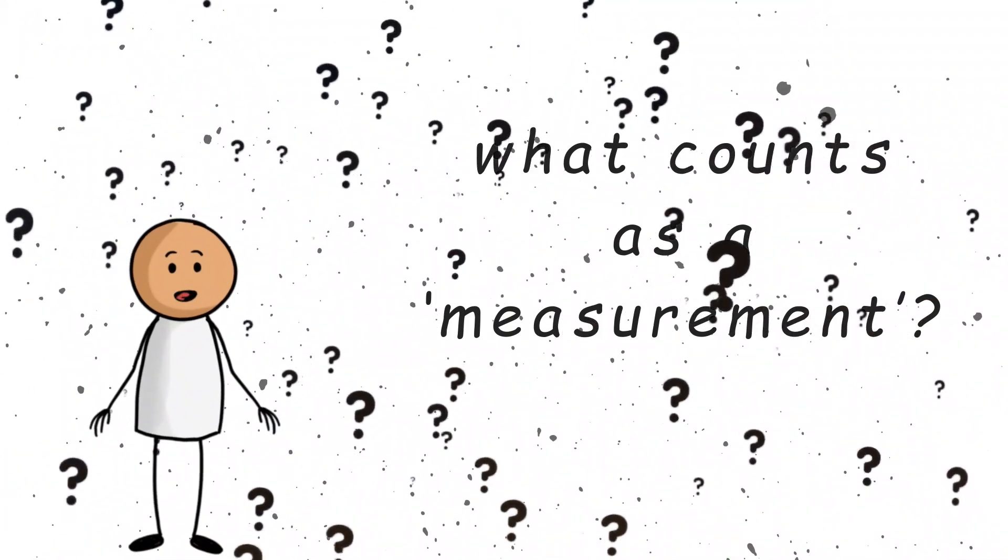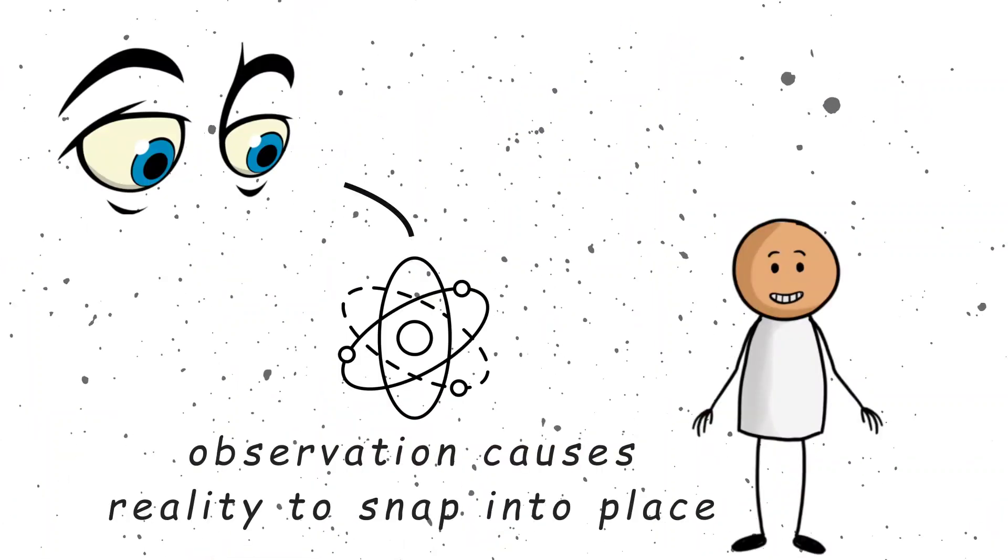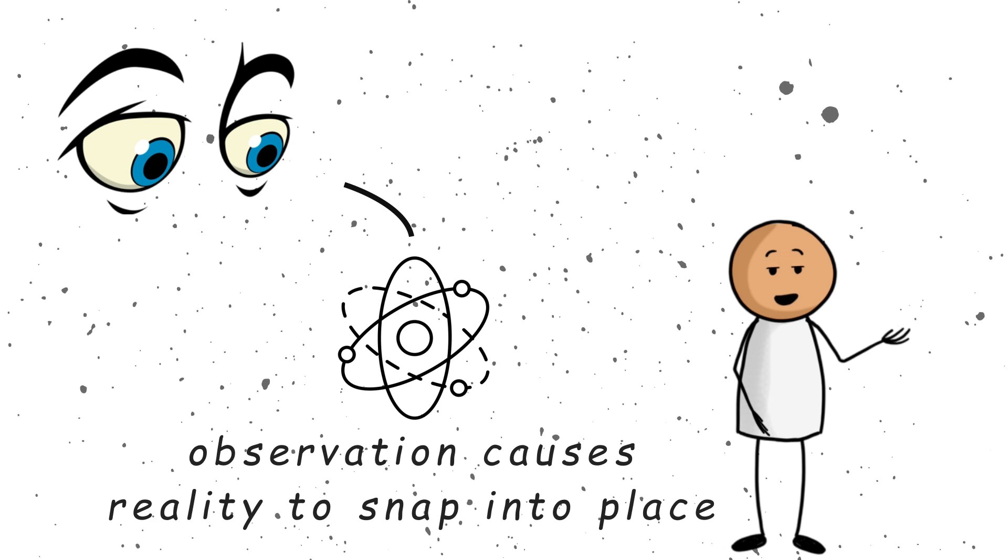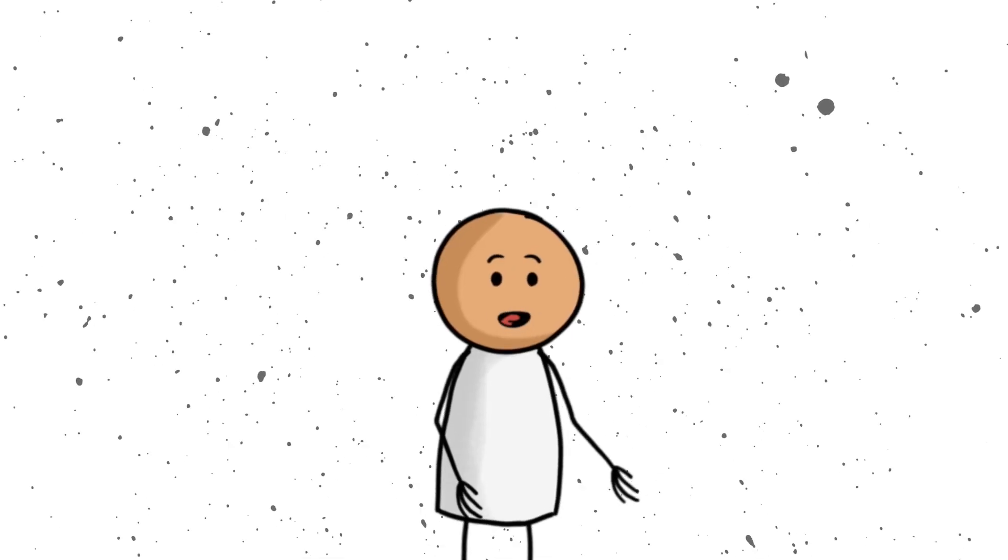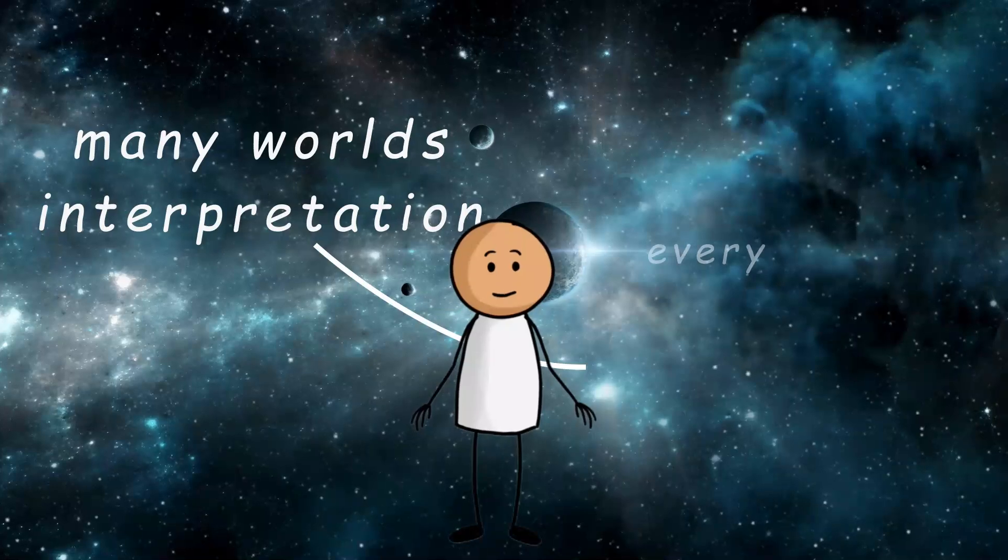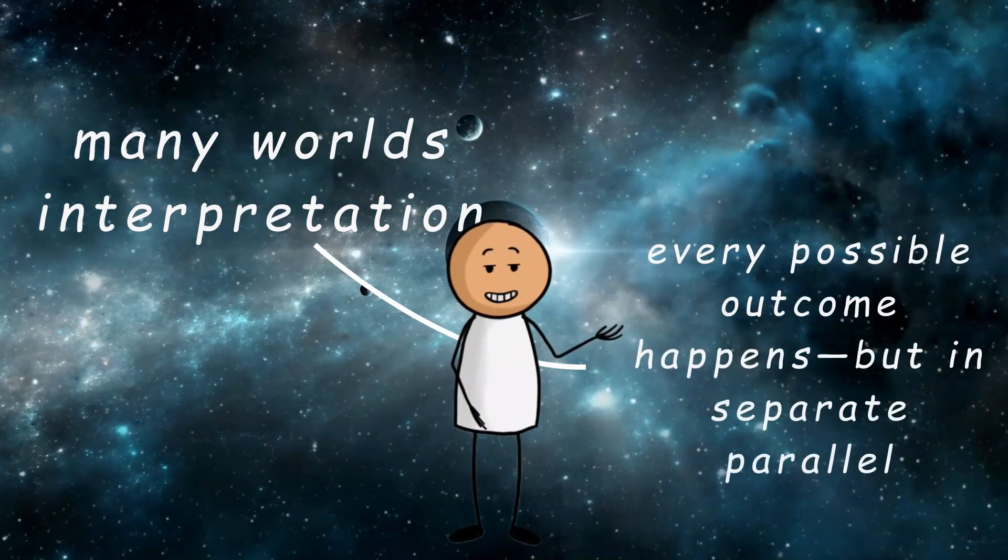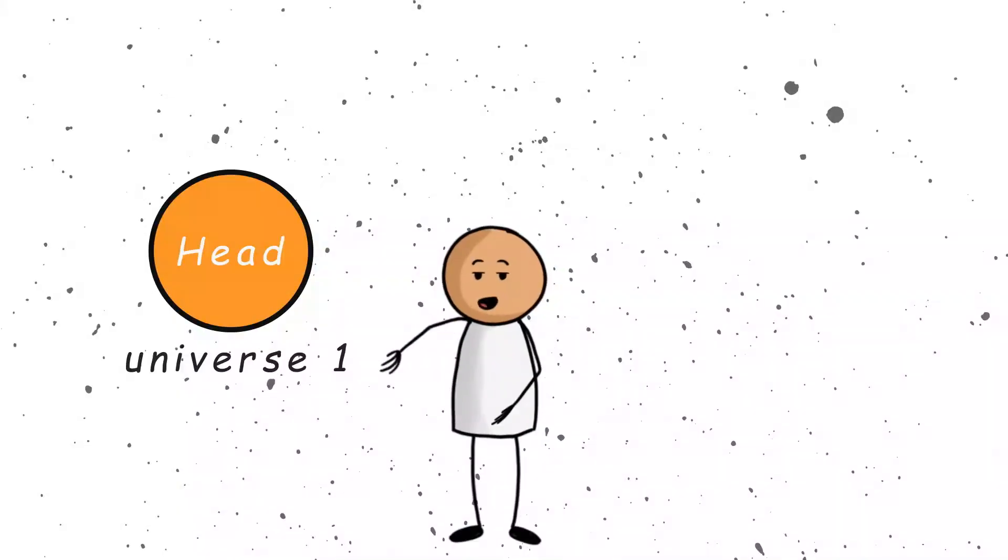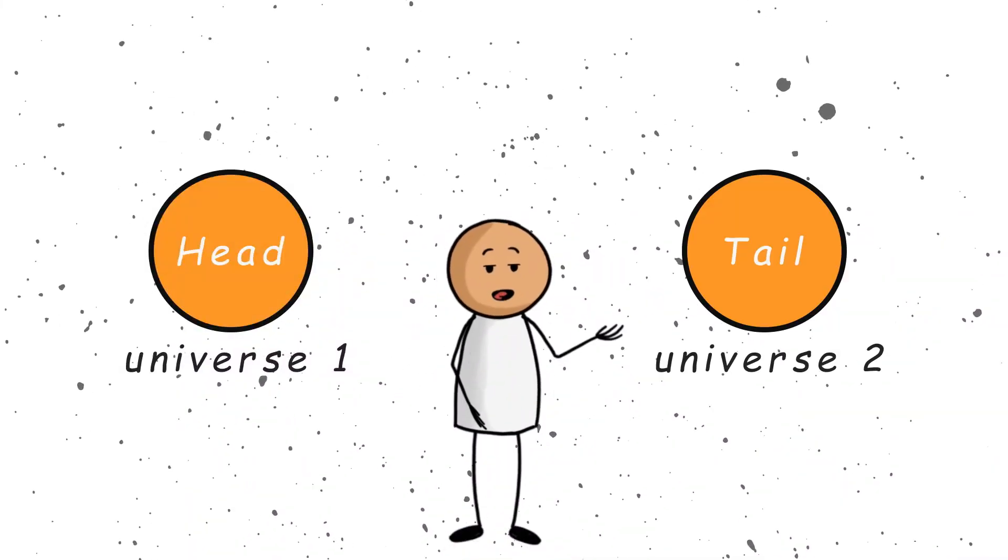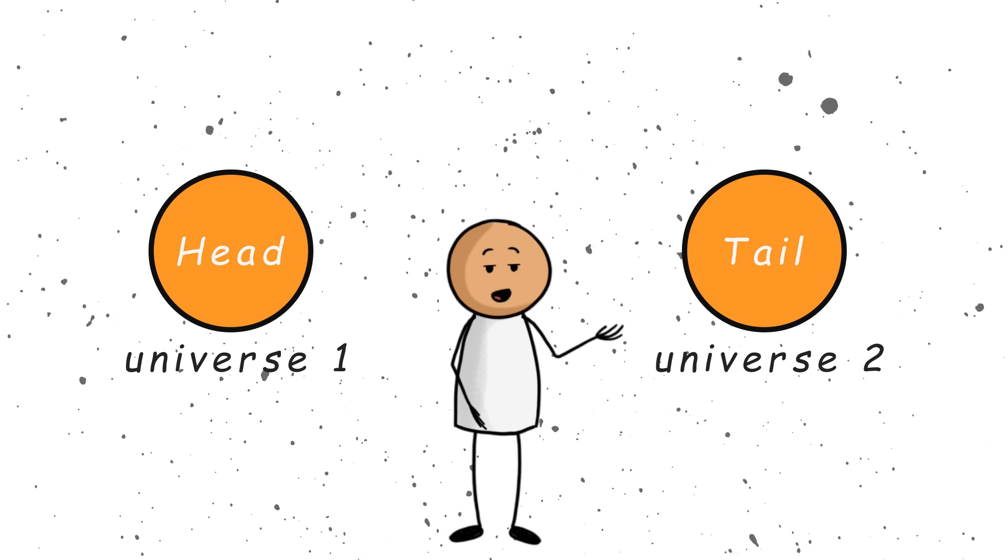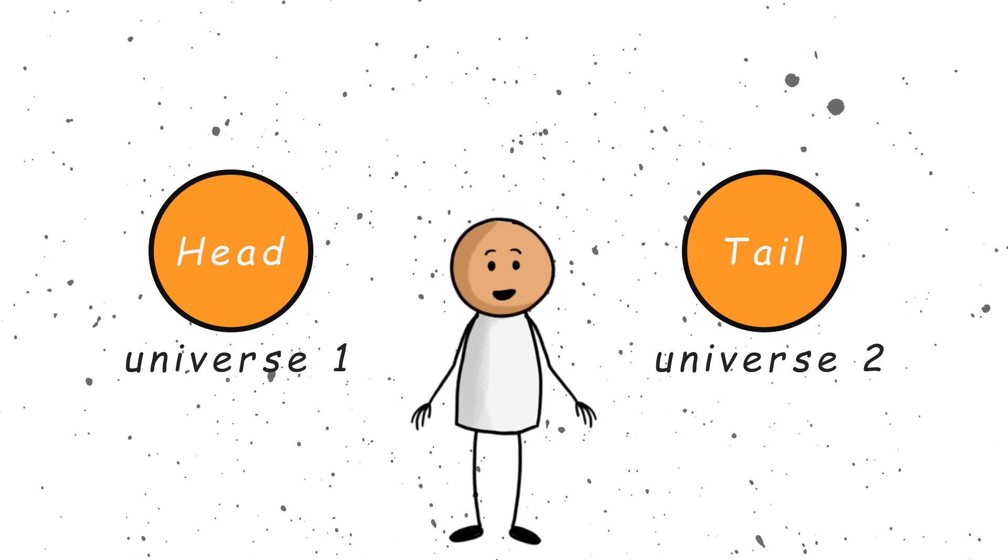There are several wild theories. One says that observation causes reality to snap into place, which basically turns all of us into accidental wizards. Another idea is the many worlds interpretation, which says every possible outcome happens, but in separate parallel universes. So if you flip a coin, one version of you sees heads, and another version in a different universe sees tails, which means somewhere out there, you might actually be good at cooking. And yes, all of this is real science.